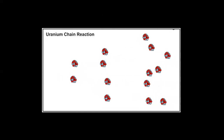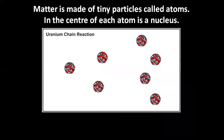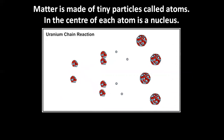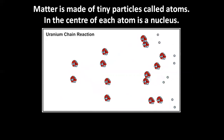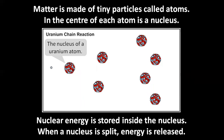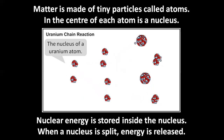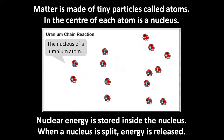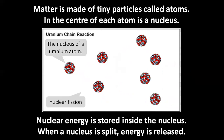Uranium chain reaction. Matter is made of tiny particles called atoms. In the center of each atom is a nucleus. Nuclear energy is stored inside the nucleus. When a nucleus is split, energy is released. This type of reaction is called nuclear fission.